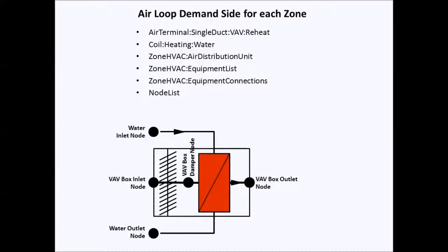This is a diagram of a VAV showing how air flows inside it. This is a reheat VAV, meaning there is a heating coil inside the VAV as well as in the AHU. Air enters into the VAV through a VAV box inlet node, then there is a damper which controls the volume of air flowing through. The volume of air flowing actually decides the temperature inside the zones — it controls volume rather than directly increasing or decreasing temperature.